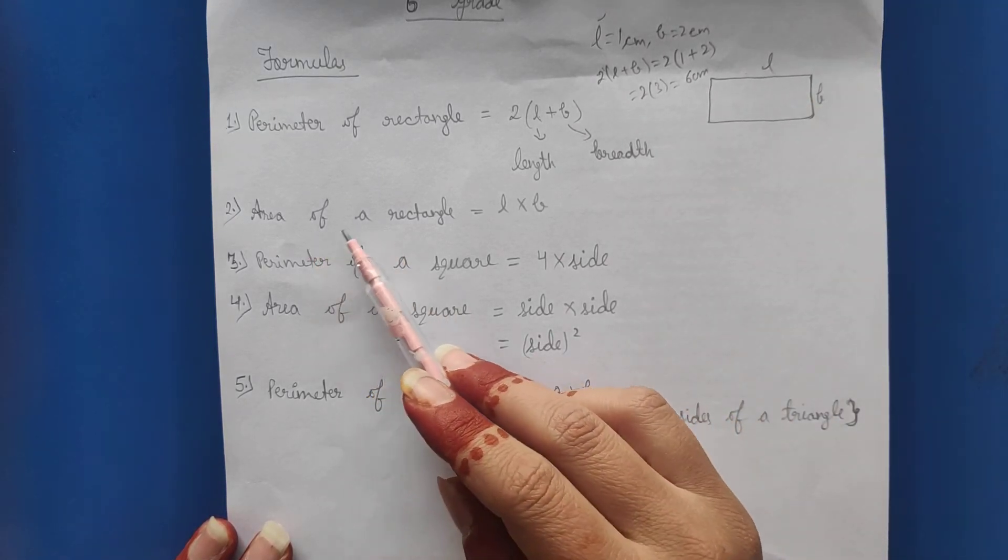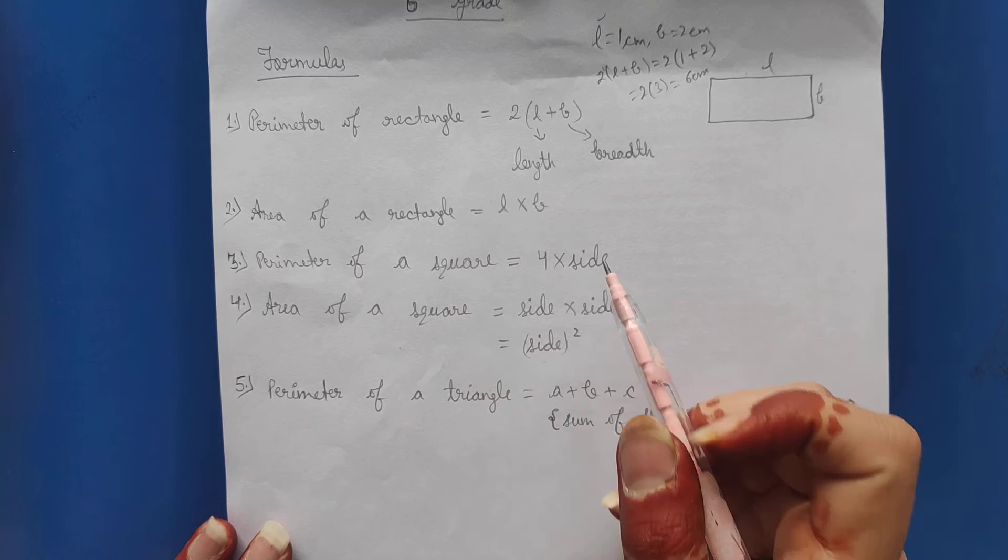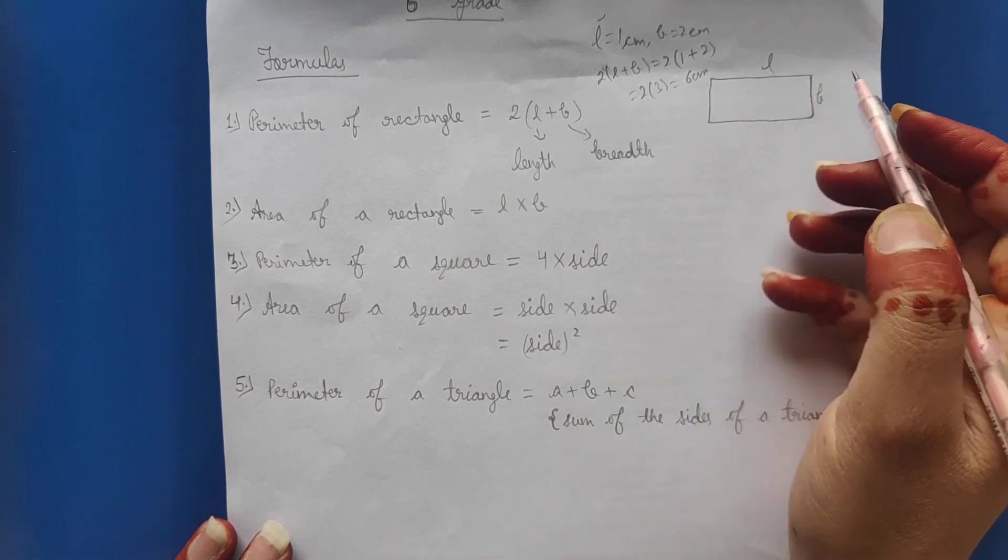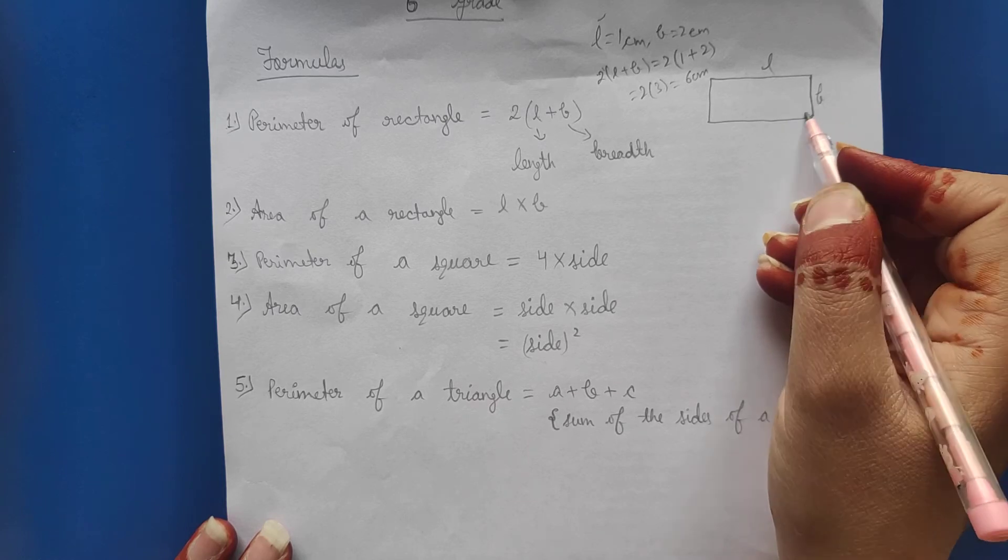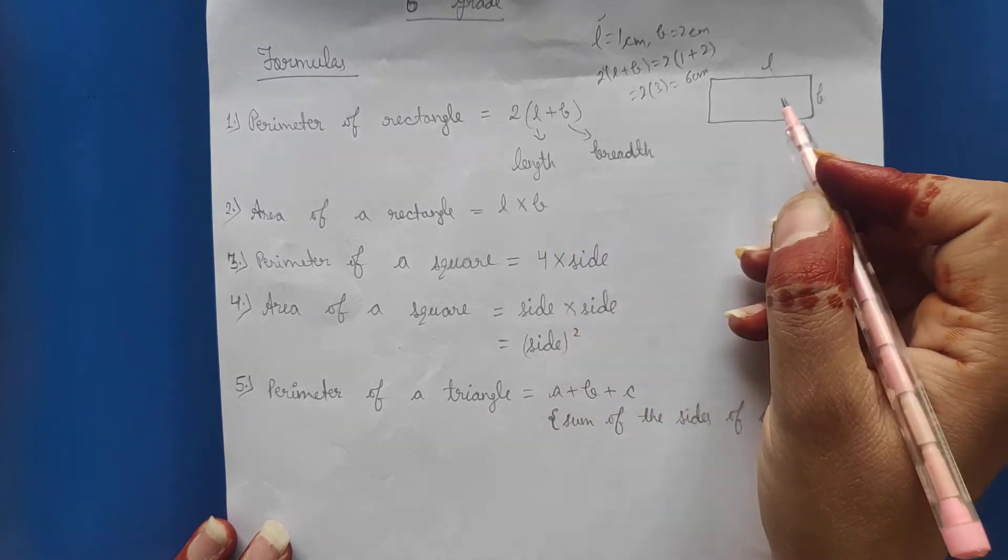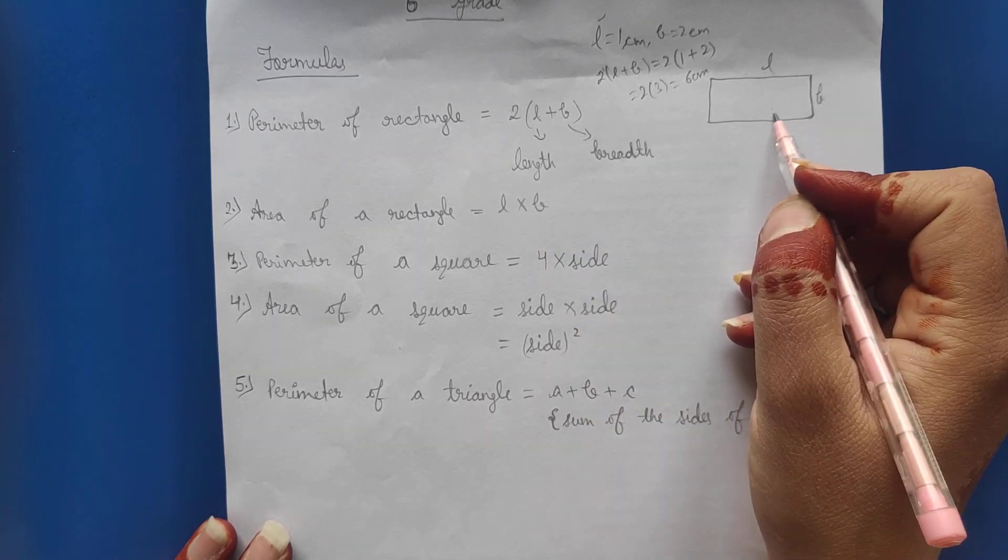Next is students, area of a rectangle. How to find out the area of a rectangle? One is length and the other is breadth. When we multiply both, we get the area of rectangle.